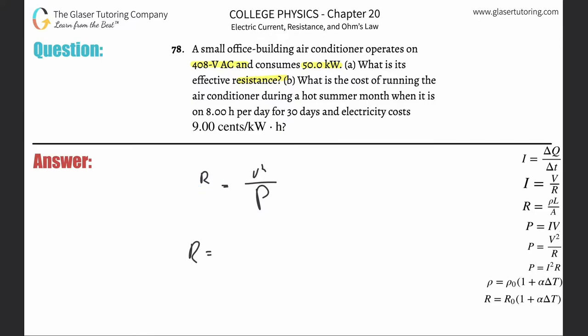Now all we have to do is plug in the values. Make sure you got the right units though. The voltage was given in volts so that's simple: 408 squared, then divided by the power. Careful, that's in kilowatts, so simply take the 50 and multiply it by 10 to the third. That's now going to be the effective resistance: 408 squared divided by 50 times 10 to the third, so 3.33 or so ohms. Alright, that is the resistance.